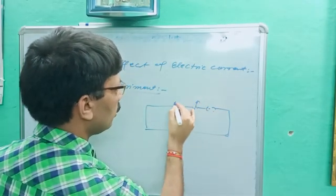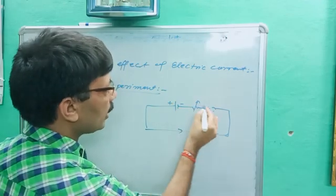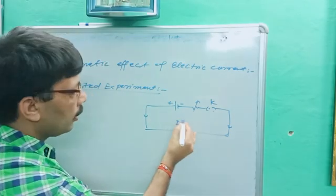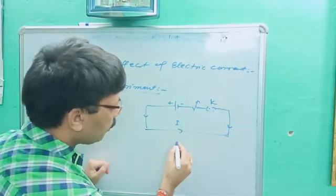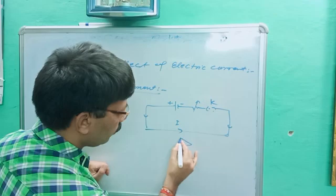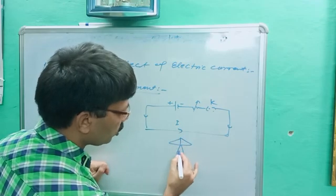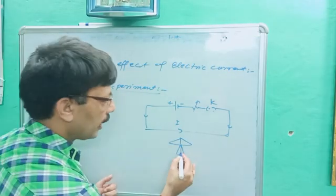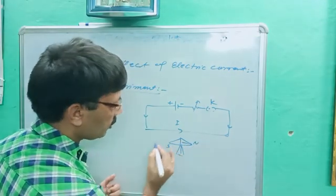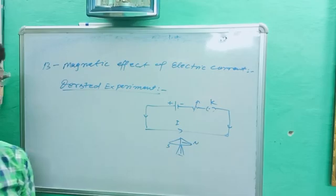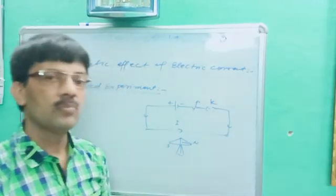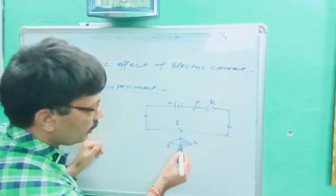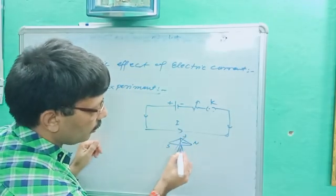The circuit has positive, negative terminals and a key. When the key is switched on, current starts flowing. Now, what he did next — he placed a magnetic needle just below the wire. When he switched on the circuit, he noticed a deflection in the magnetic needle — north moved to a new position.